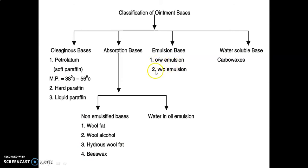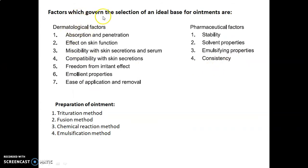Emulsion bases are of two types: oil-in-water (O/W) emulsion, where oil is the internal phase and water is the external phase, and water-in-oil (W/O) emulsion where water is the internal phase and oil is the external phase. Water-soluble bases include carbowaxes. The factors governing the selection of an ideal ointment base are dermatological factors and pharmaceutical factors. Dermatological factors include: absorption and penetration, effect on skin function, miscibility with skin secretions and serum, compatibility with skin secretions, freedom from irritant effect, emollient properties, and ease of application and removal.